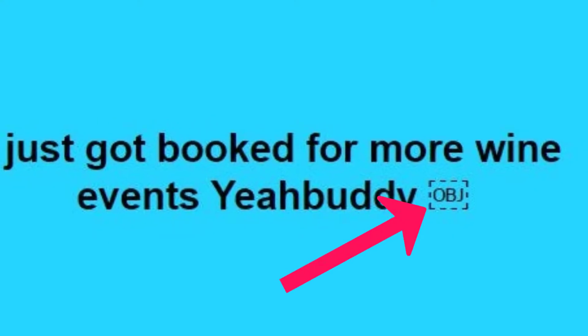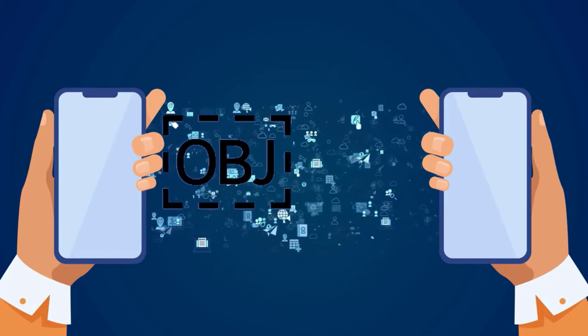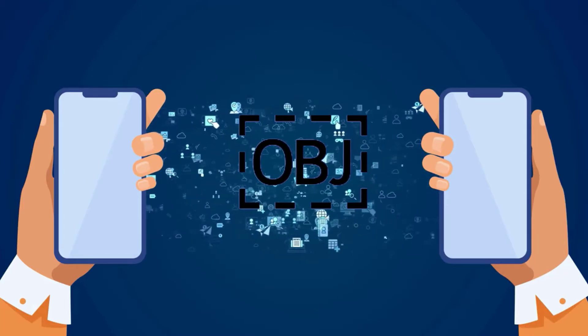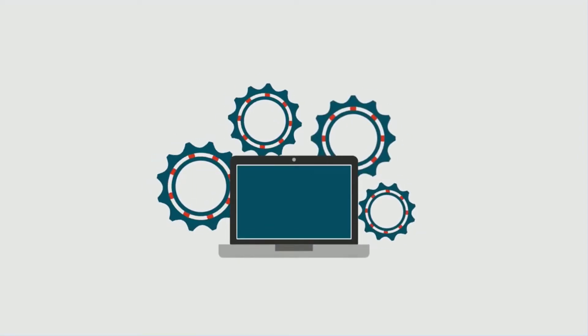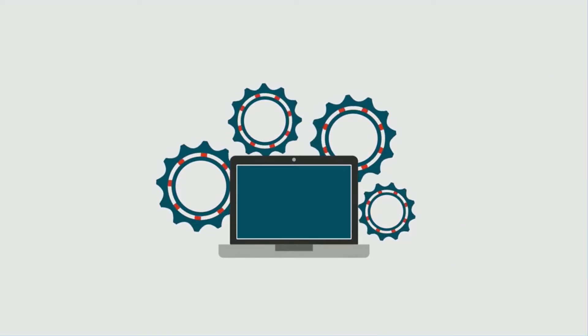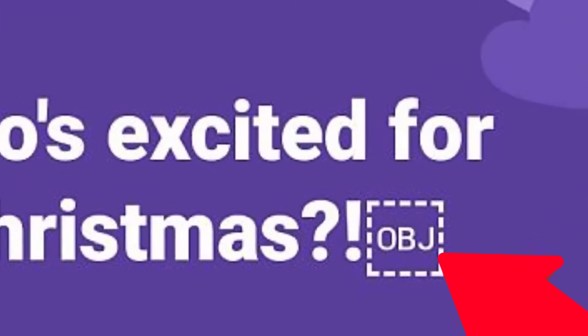Basically, whatever you see on your texting apps like Facebook, Instagram, Twitter, TikTok, or WhatsApp are objects. OBJ pops up on the screen as a dashed box or question mark instead of those objects. It happens mostly in the case of emojis, special characters, or symbols that your device doesn't support. When you see a post or receive a text containing emojis your device can't recognize, OBJ replaces those certain emojis.